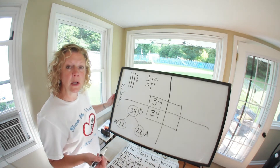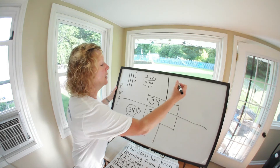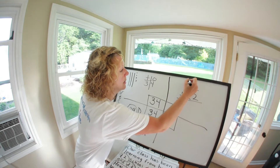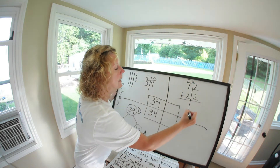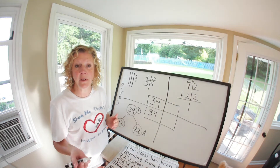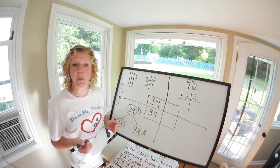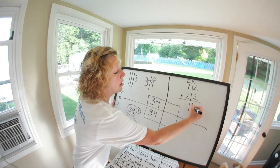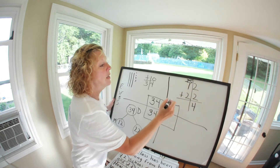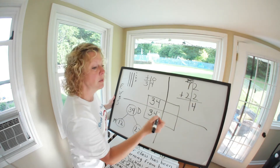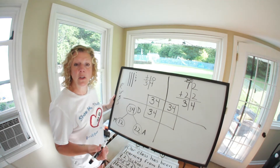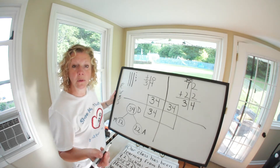Now we're going to do our number sentence. We're going to write 12 plus 22, and we'll make sure we have our box with a line down the middle to separate our tens and ones — it's there if we need it. We always start with our ones: two plus two is four. There are no tens in four, so we cross off the box. Then we just add one plus two, which gives me three. So again my answer is 34. The question asked how many days in both months.